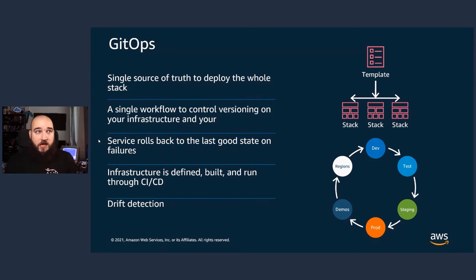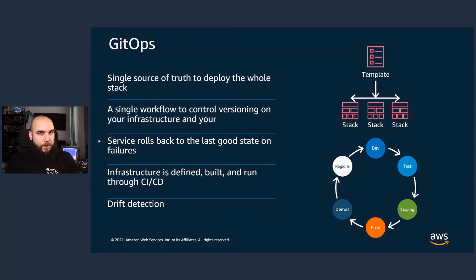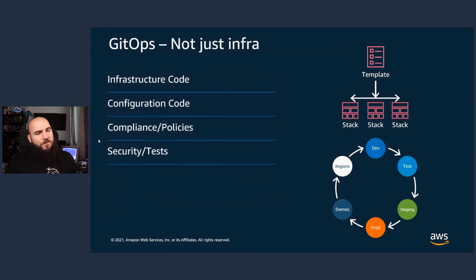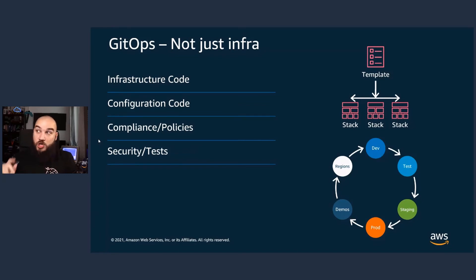And because you have a desired state, you can also detect potential drift. What I mean by drift is that if you define that your infrastructure needs to look like this, but somebody made a manual change, with all the tools in your GitOps and DevOps portfolio you can actually detect drift — CloudFormation drift detection is one of those. And also it's not just infrastructure code — it's your configuration code, it's your compliance and policies, your security code and tests. All of those things should not just be on your workstation — they should be in a Git repository. So remember: do not click, Git push.